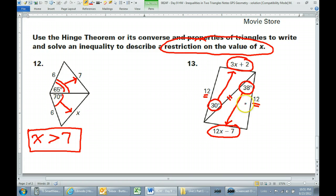So which is bigger, the 3x plus 2 or the 12x minus 7? I want you to actually answer this, even though there's nobody around. Which is bigger, the 3x plus 2 or the 12x minus 7?